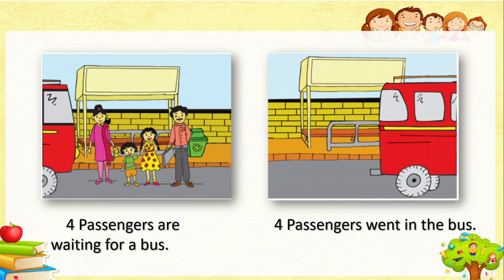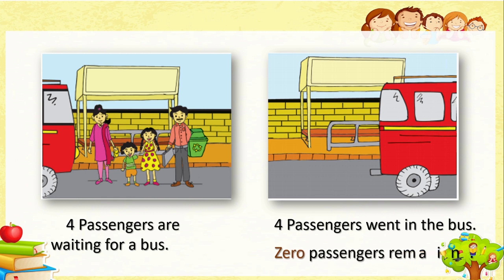How many remained on the bus stop? No one is there. All four passengers boarded the bus. We can say: zero passengers remain. Zero means no one, nothing. Zero passengers remain.